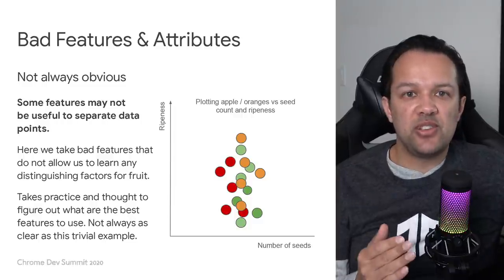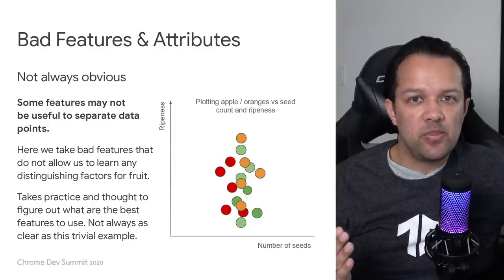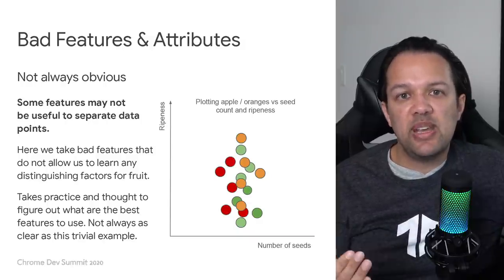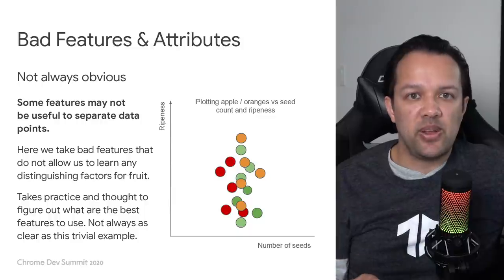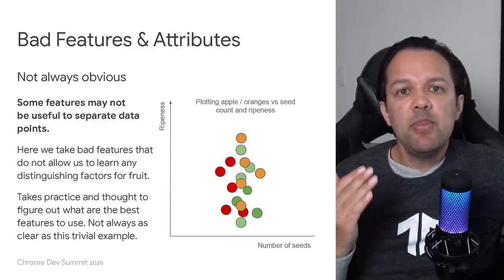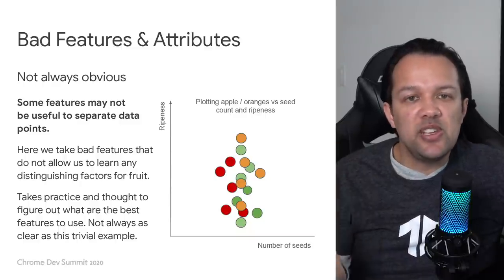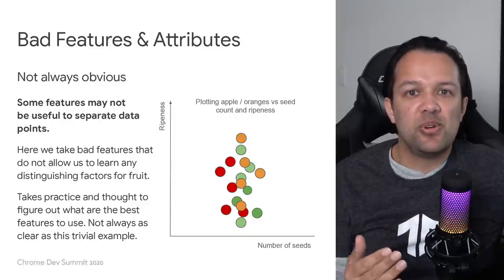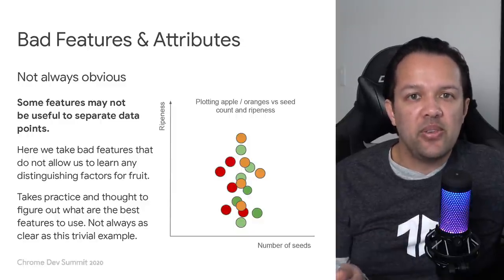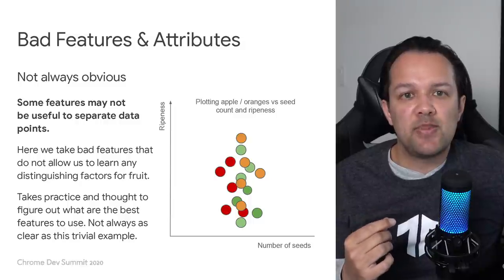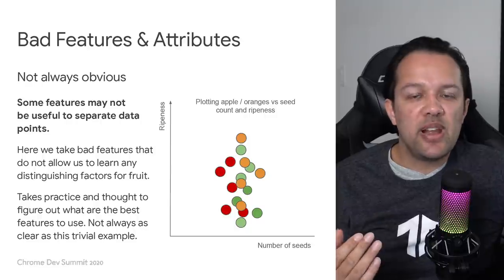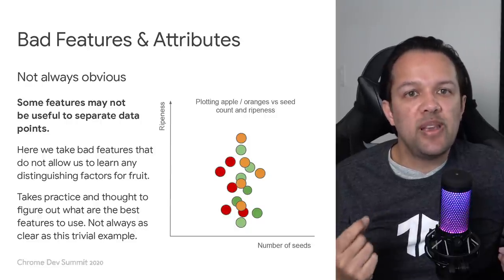But what if we had chosen bad features? Let's take ripeness and number of seeds — the plot would be less useful to us. There's no straight or even curved line that would allow us to separate these data points. And what about those medical scans we spoke about — just RGB image pixels? How do you define features for that? It's not always obvious.